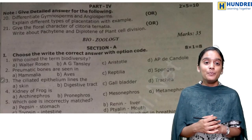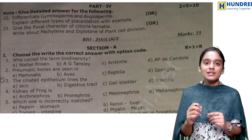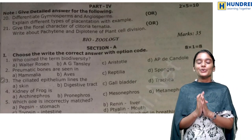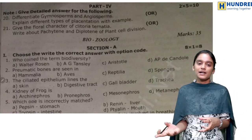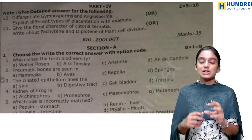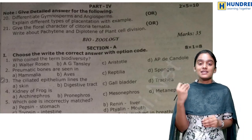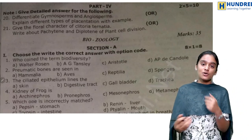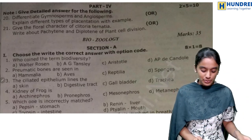Next, write about packaging and cell division of plant cell division — this is in the chapter cell cycle and cell division. In just twenty to thirty minutes, you can recall the entire chapter because it is a simple chapter with diagrams. Easy concepts — you can just understand from the diagram.